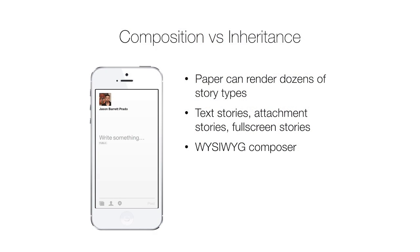The next principle is choosing composition over inheritance. Paper can render dozens of story types: there's text stories, attachment stories with links and photos, full screen photo stories, check-ins, shared posts, videos, and lots of combinations among these. It might seem reasonable at first to model these with an inheritance hierarchy — like maybe a text story view is the parent of an attachment story view, which is the parent of a full screen attachment story view. This is actually not an option because of our composer. We set out to build a fully WYSIWYG composer where a single story card can transform from any kind of story to any other kind of story on the fly. This constrains us to have just one kind of story view and make it configurable over time.